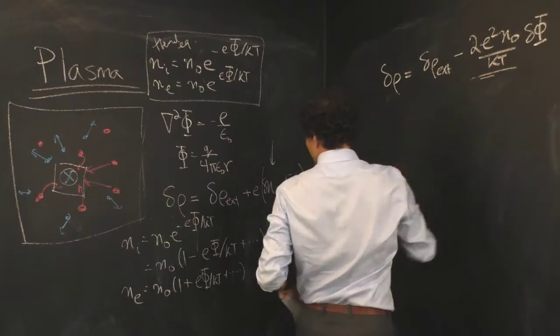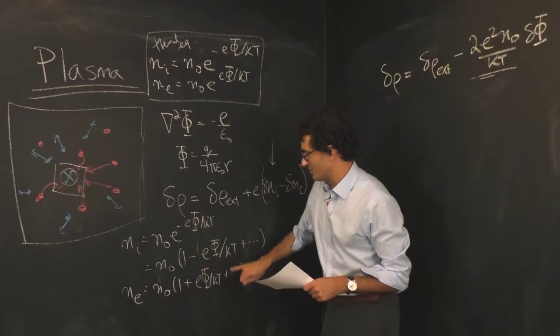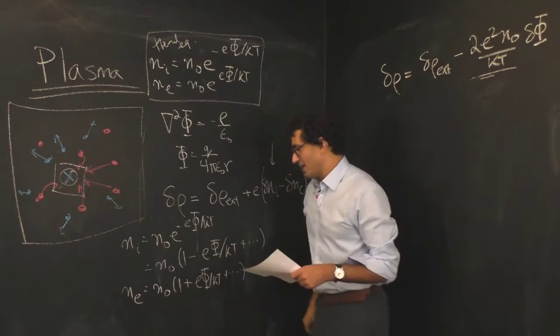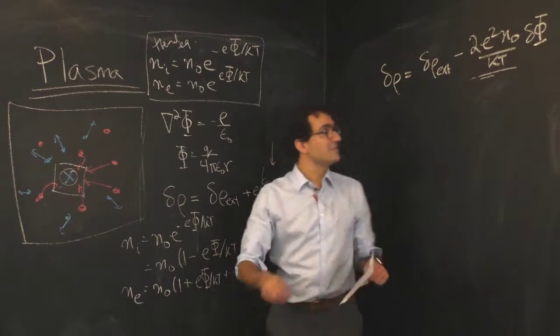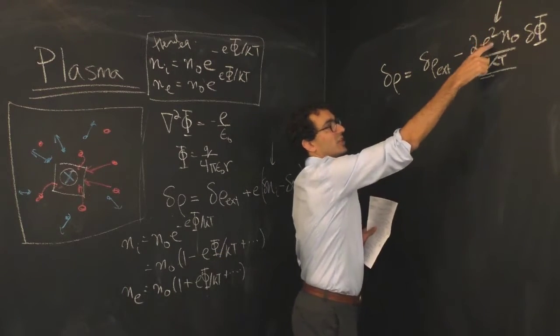This term simply comes from taking this and subtracting this. The zeroth order terms cancel out and these add together because I have a minus sign on the electron. Notice this comes in at the order of the electron charge squared.